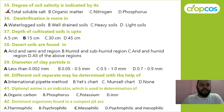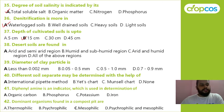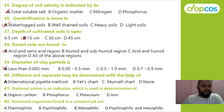Denitrification is more in waterlogged soil, well-drained soil, heavy soil, or light soil? Correct answer is waterlogged soil. Depth of cultivated soil is up to 5, 15, 30, or 45 cm? Correct answer is 15 cm. Desert soils are found in arid climatic conditions. Diameter of clay particle is less than 0.002 mm — correct answer is A. Different soil separates may be determined with the help of the international pipette method — correct answer is A.